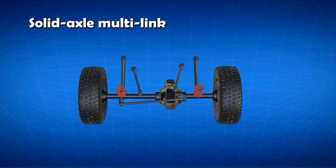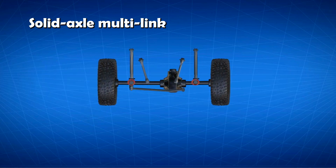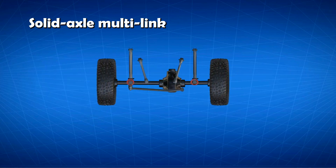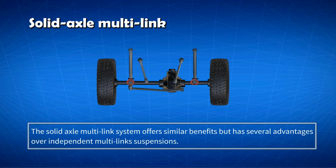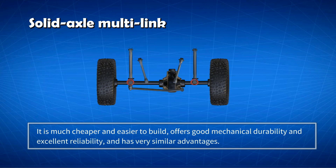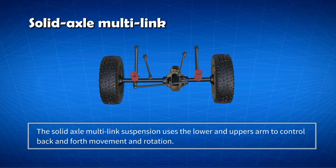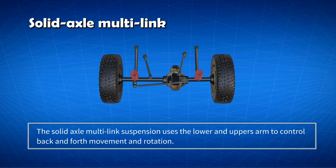A variation of the same concept is the solid axle multi-link system. It offers similar benefits but has several advantages over independent multi-link suspensions: it is much cheaper and easier to build, offers good mechanical durability, flexibility, and excellent reliability. The solid axle multi-link suspension uses the lower and upper arm to control back and forth movement and rotation, which occurs during acceleration and braking.